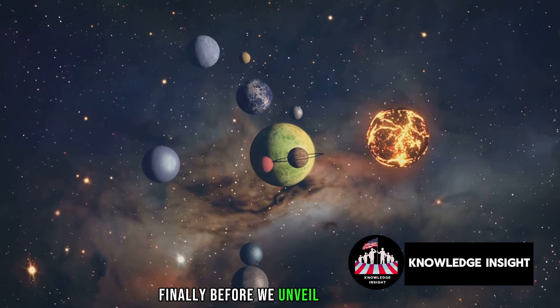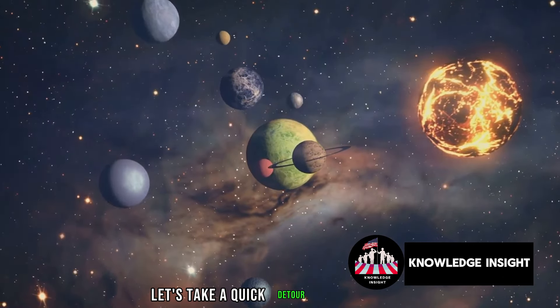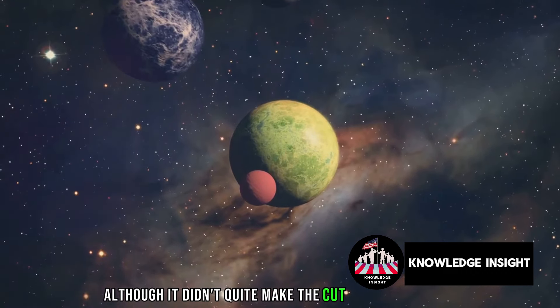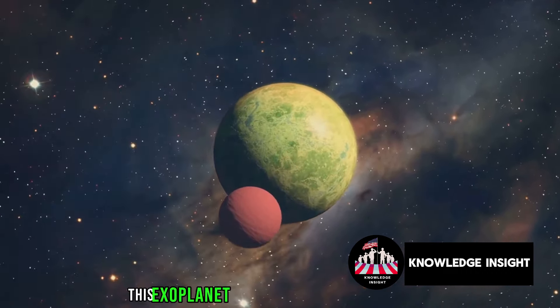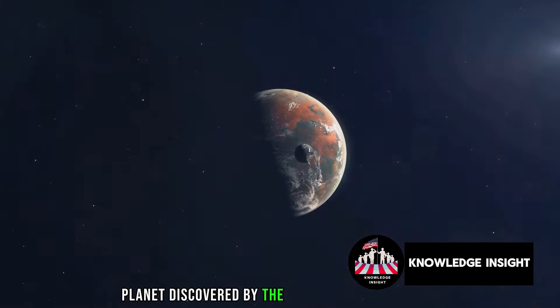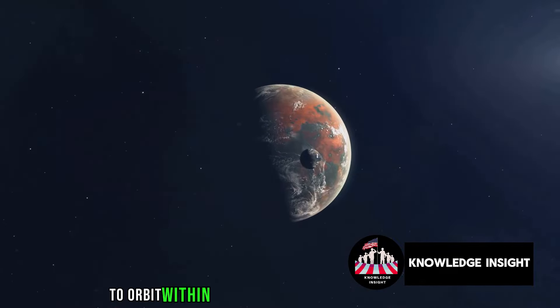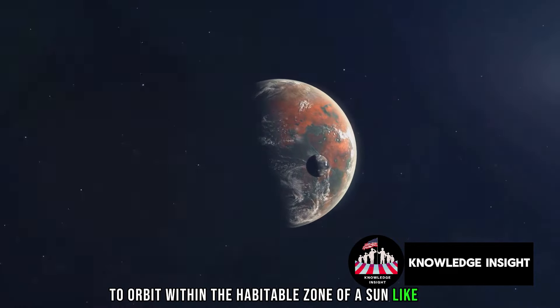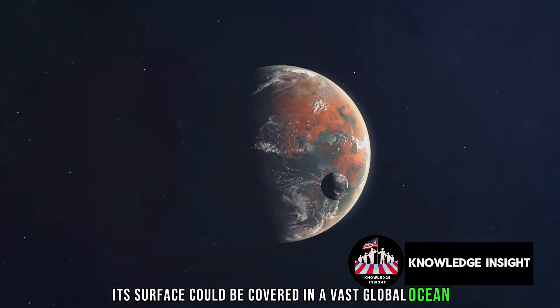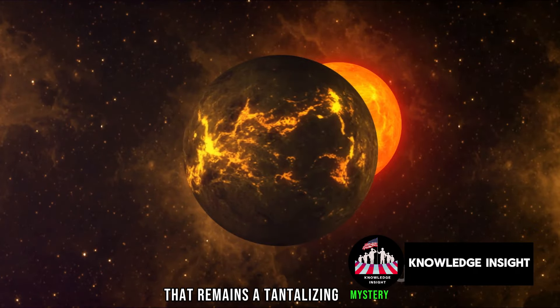Finally, before we unveil our top pick, let's take a quick detour to Kepler-22b. Although it didn't quite make the cut for our top four, this exoplanet deserves an honorable mention. It was the first confirmed planet discovered by the Kepler Space Telescope to orbit within the habitable zone of a sun-like star. Its surface could be covered in a vast global ocean, but for now, that remains a tantalizing mystery.